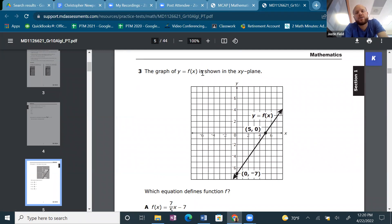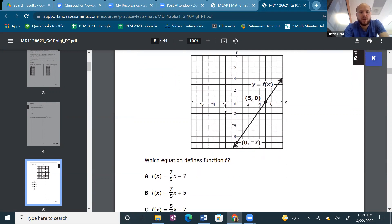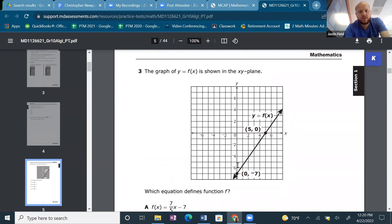The graph of y = f(x) is shown in the xy-plane. So the coordinate grid can be called an xy-plane. Which equation defines function f? Alright, let's find function f. We know the y-intercept.